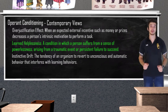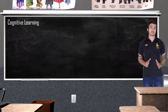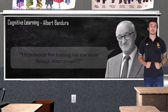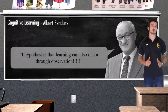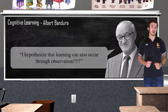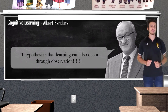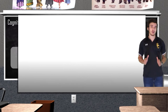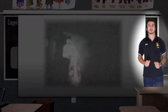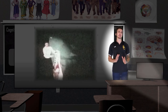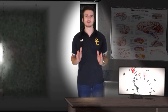Next up, we have cognitive learning. In 1961, cognitive psychologist Albert Bandura hypothesized that learning can also occur through observation. This went directly against what Skinner hypothesized, stating that all learning was a result of conditioning and environmental consequences. To prove his theory, Bandura would have children placed in a small room where they would observe an adult attack a large Bobo doll — the adult was basically modeling behavior for the children.